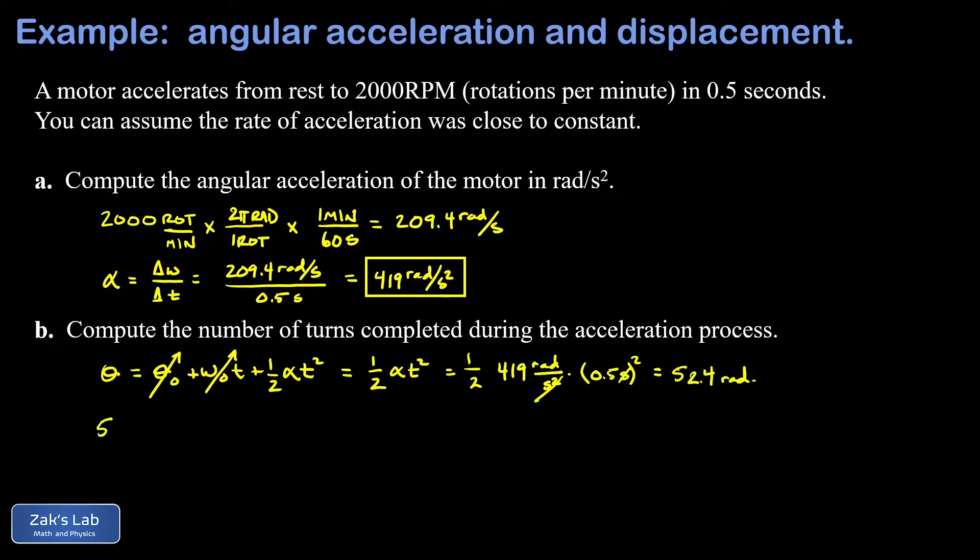Finally we have to do unit analysis again. I have 52.4 radians and then multiply by the conversion factor with 2π radians in the denominator. Those cancel for every one rotation or turn as I said in the problem. Dividing 52.4 by 2π I get 8.34 rotations or you could call them turns. And we're done.